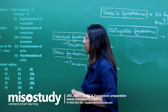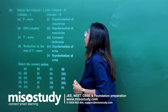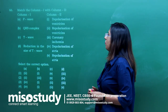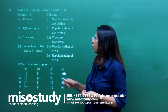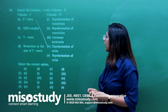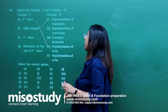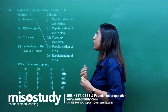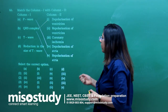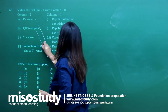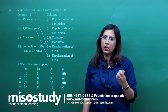Question number 66 — from body fluid and circulation. Match column 1 and 2. The P wave arises because of depolarization of atria. The QRS complex occurs because of depolarization of ventricles. The T wave occurs because of repolarization of ventricles. Reduction in the T wave is associated with coronary ischemia. Match accordingly and look for the correct option.